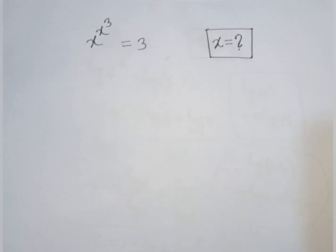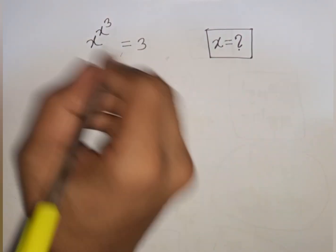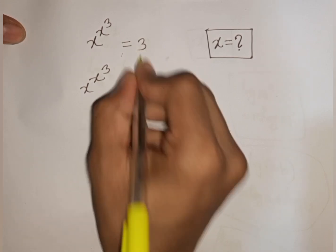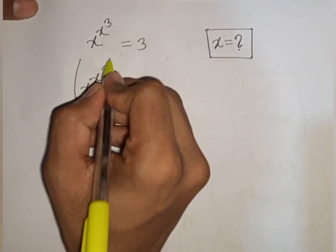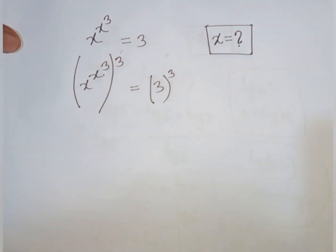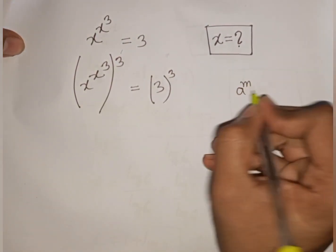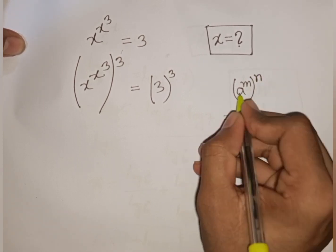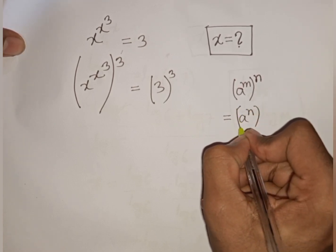Now: how to solve x power x power 3 is equal to 3 — find the value of x. We have x power x power 3 is equal to 3. Now we multiply both sides by the power of 3. You can apply the exponential rule that a power m, bracket power n, is equal to a power n, bracket power m.